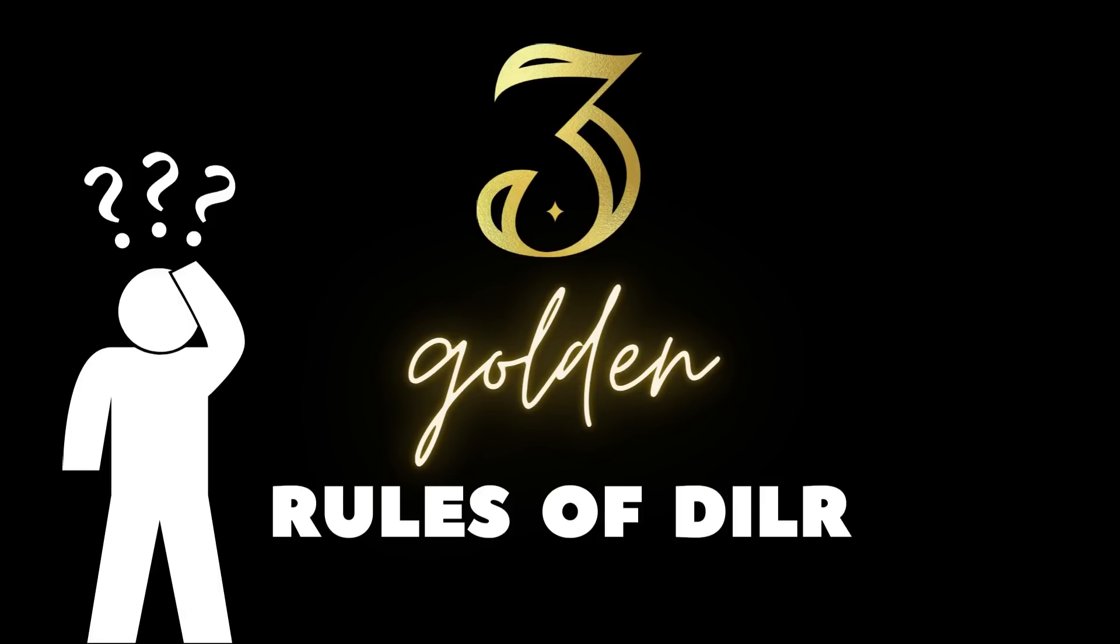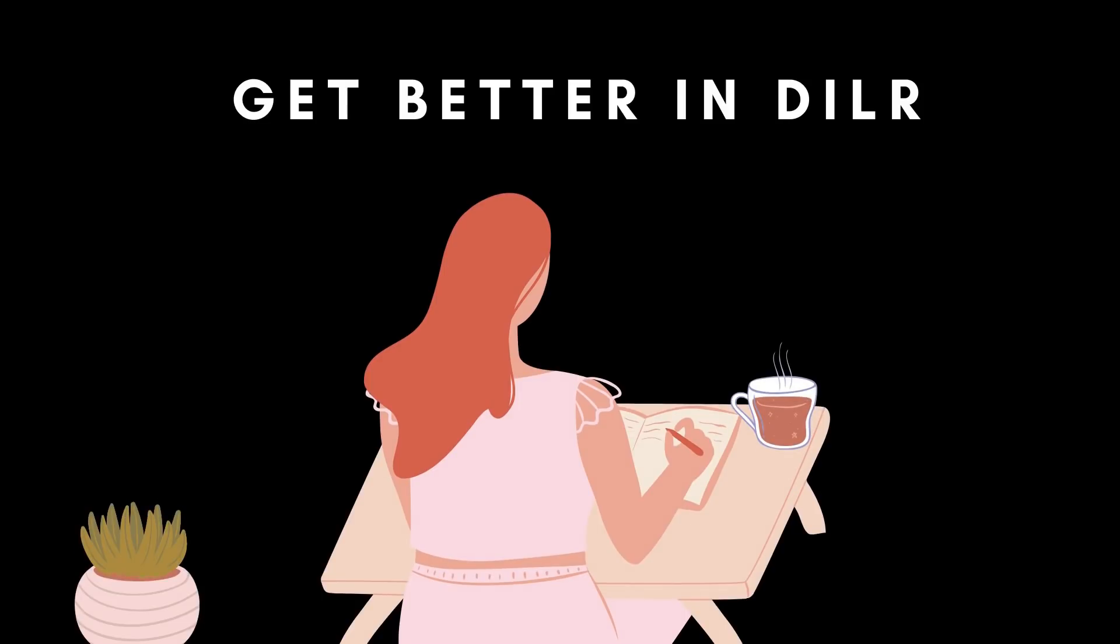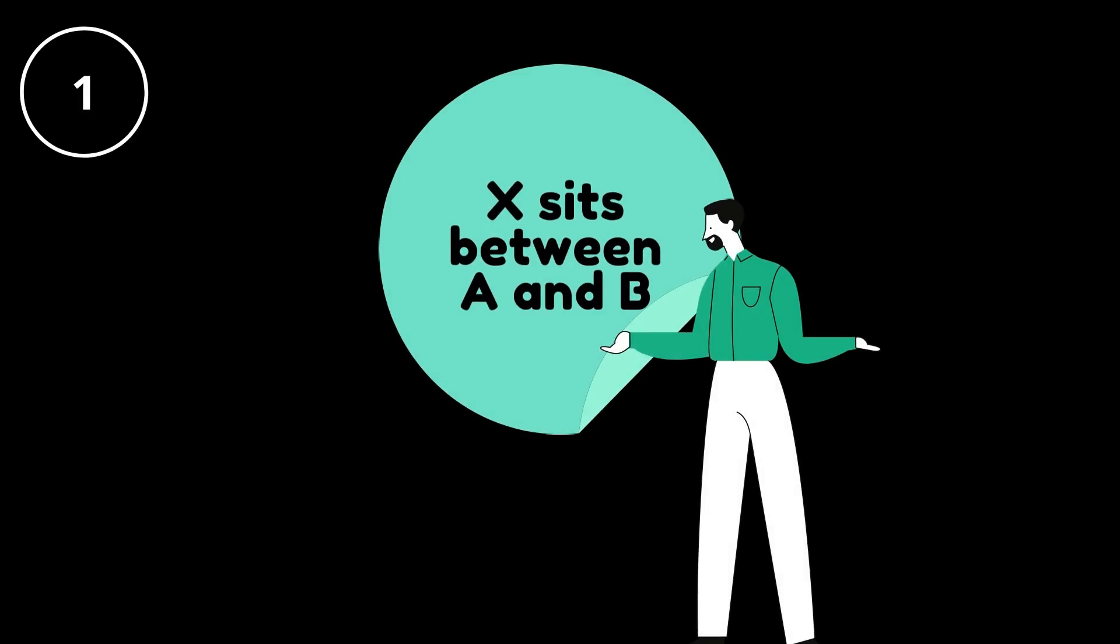You are going to observe three rules that are going to keep coming back again and again in this entire video, which I used during my preparation and they helped me get better in DILR. The first was that if there's a constraint that has been given to you, then in most likely cases, you are going to make use of it in one way or the other. The only thing you need to figure out is why it has been given to you in the first place.